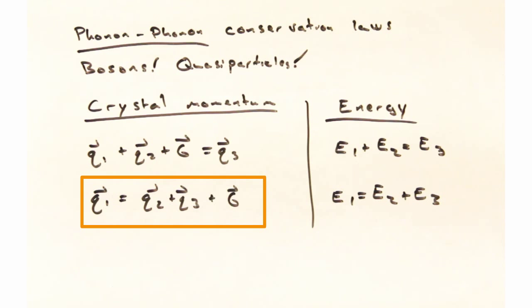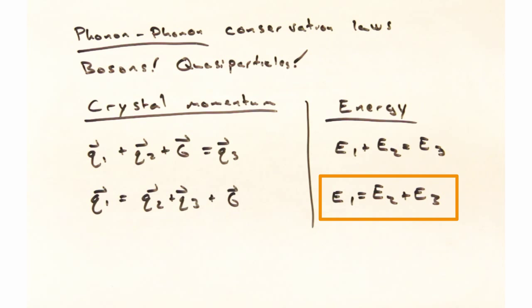Likewise, on this lower line here, you can see how we could start with some high-energy phonon, and that phonon could then split into two other phonons, q2 and q3, plus some reciprocal lattice vector g. Looking to the right here, we can see this energy conservation law for this phonon decaying into two other phonons.